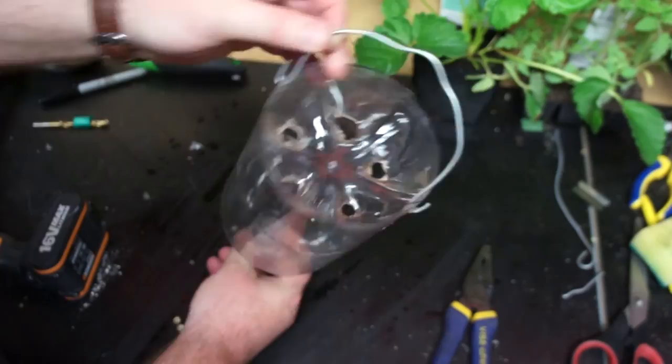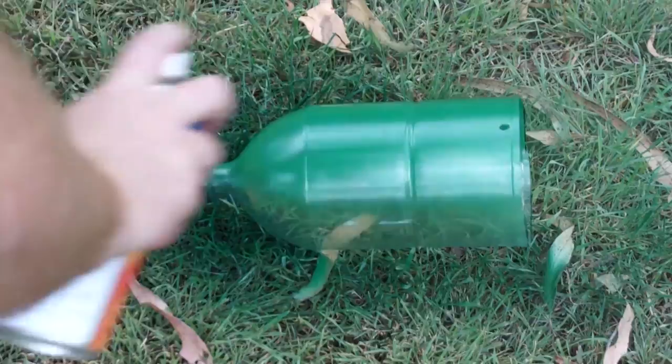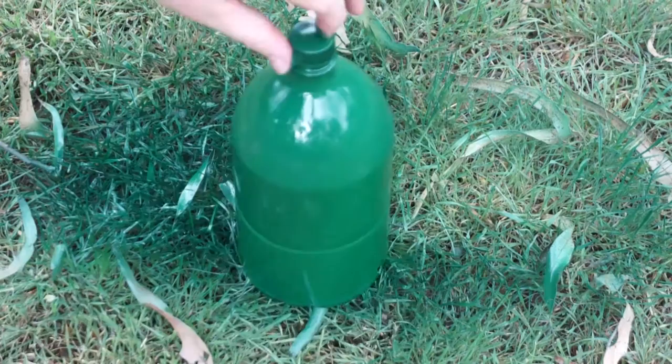But for now it's time to paint the outside of the container. This is just to protect the roots and make it look a little bit nicer. I'm using green spray paint but you can pretty much use any color you like.